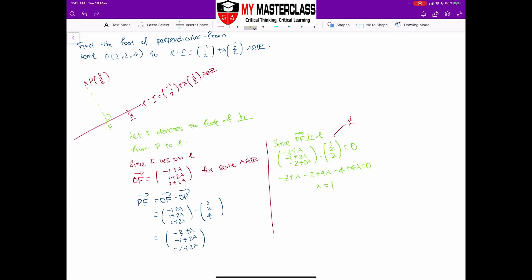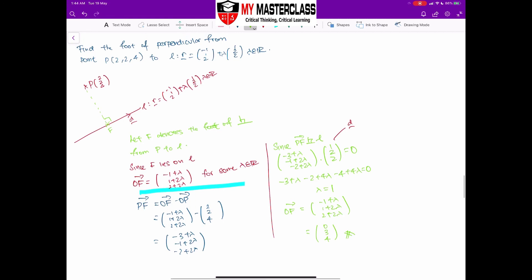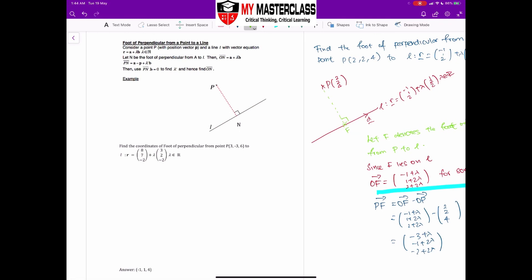With this, you already found OF in terms of lambda over here. So I can quickly substitute my lambda value back. So OF will be equal to (-1 + λ, 1 + 2λ, 2 + 2λ). And because I know my lambda value, which is 1, I can essentially quickly derive OF to be equal to (0, 3, 4). With this understanding, you can actually try the example over here, which I have given you a different kind of point and different line, you should be able to derive the foot OF to be (-1, 1, 4).